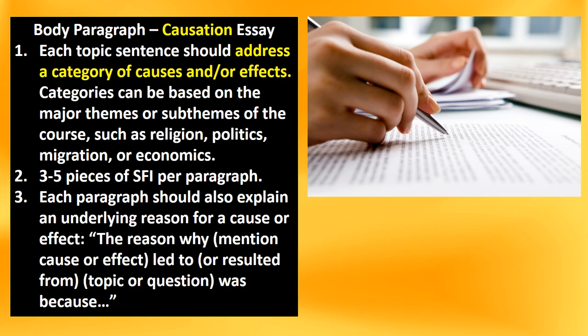For body paragraphs, your topic sentence is the first sentence and ties back to whatever the thesis statement may be. It introduces the category and takes a position with it. Usually you want to start with your most significant cause or effect — that needs to be the first body paragraph. Look at three to five pieces of SFI — specific factual information, a.k.a. key terms — per paragraph. Also think about level two type of writing: what led to something happening, what led as a consequence, as a result. Those types of phrases can really make your essay turn out great.